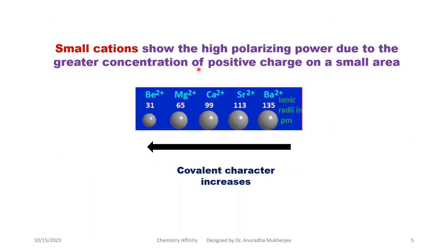Small cations have high polarizing power due to the greater concentration of positive charge on a small area. High polarizing power means more covalent character of the ionic compound. For example, Be²⁺ has a smaller ionic size, which is why Be²⁺ has high polarizing power, and its ionic compound has more covalent character.